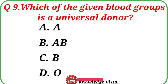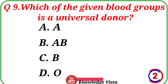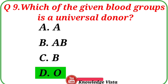Question number 9: Which of the given blood groups is a universal donor? Option A: A. Option B: AB. Option C: B. Option D: O. The correct answer is option D, O. O blood group is the universal donor. Specifically, O blood group is the universal donor, whereas AB is the universal receiver.